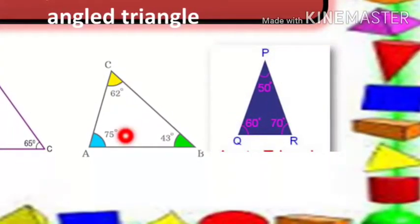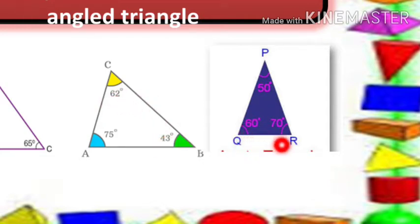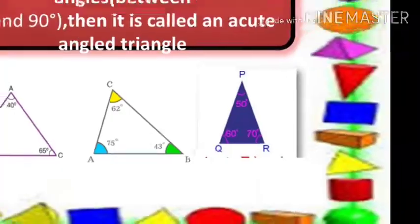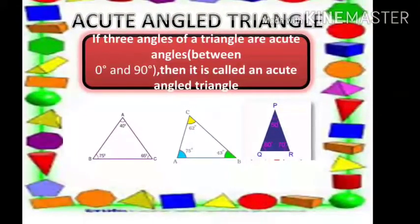For example, angles 62°, 75° and 43° — all three are less than 90°. Another example: 50°, 60°, 70° — all three angles are less than 90°. So all three triangles are considered as Acute Angled Triangles.